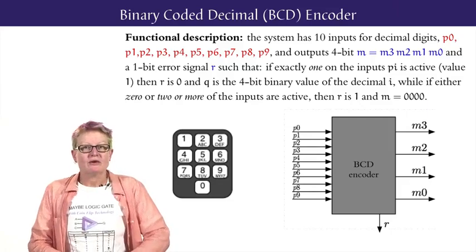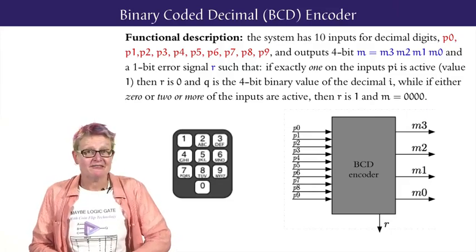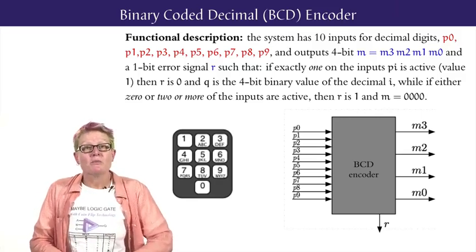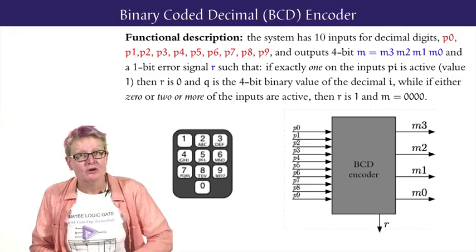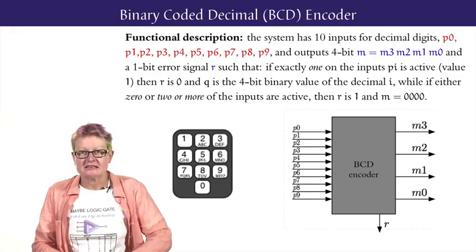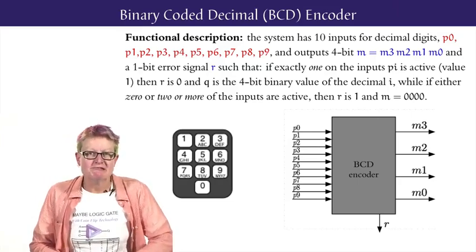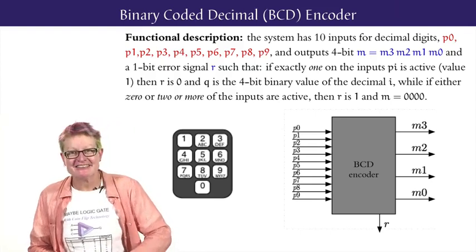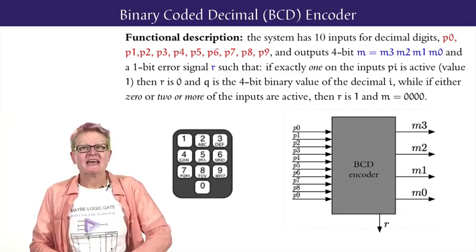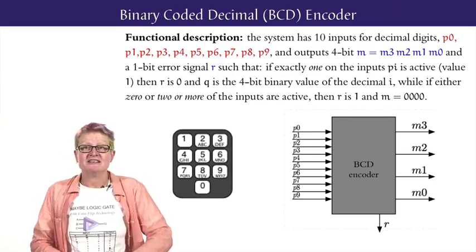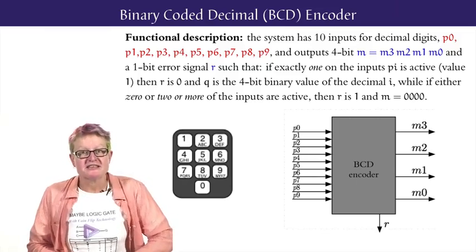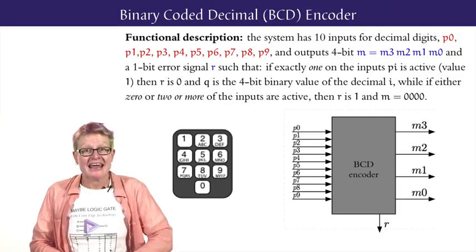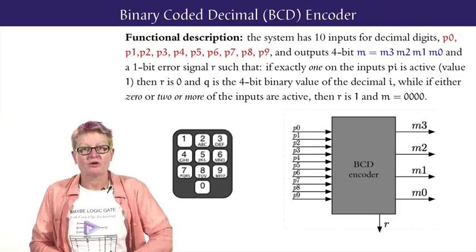For example, if input p6 is the only one active, meaning keypad button 6 is cleanly pressed, then the output m will be 0110 as the 4-bit binary translation of 6, and the error output r will be 0. If 0 or 2 or more inputs are active, then output m must be 000000 and r is 1. The block structure for this system shows the 10 inputs for the decimal digits, the 4-bit binary output m, and the 1-bit error output r.